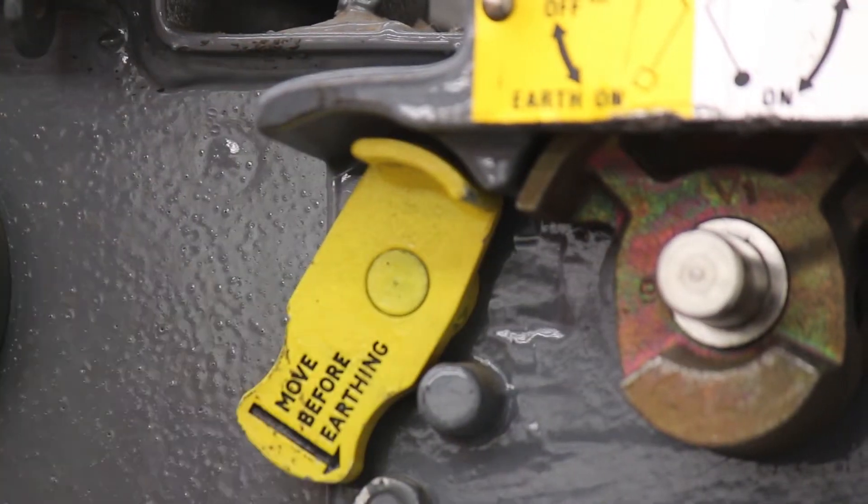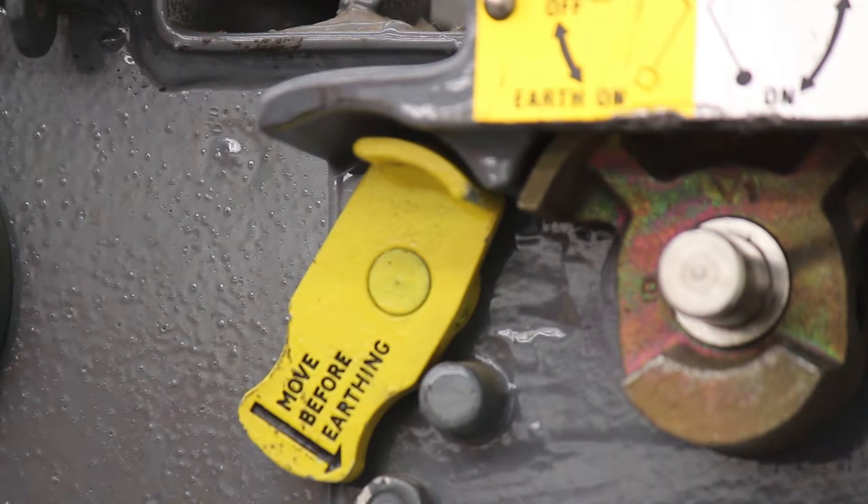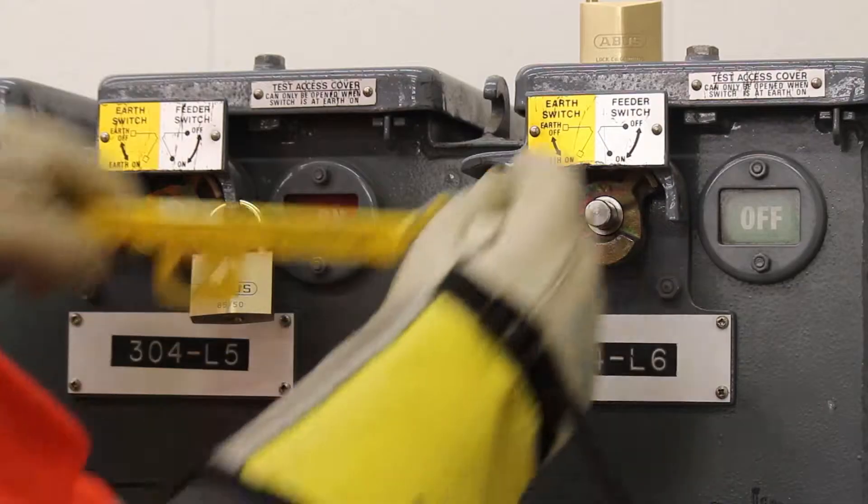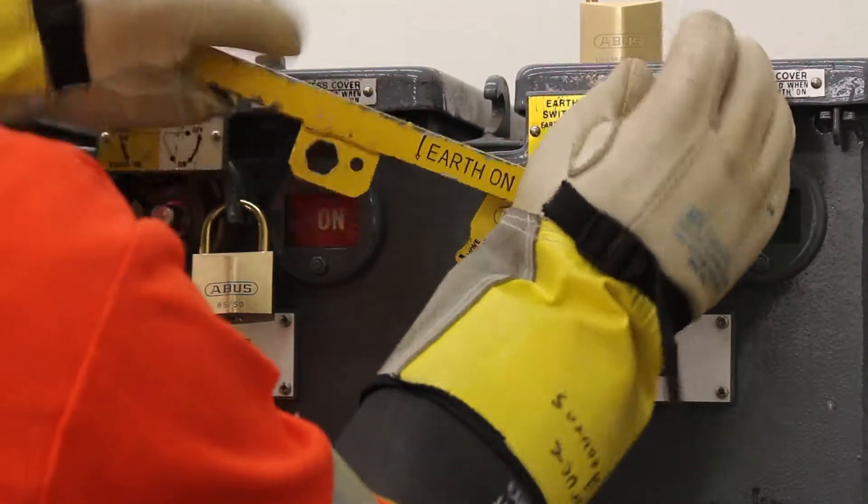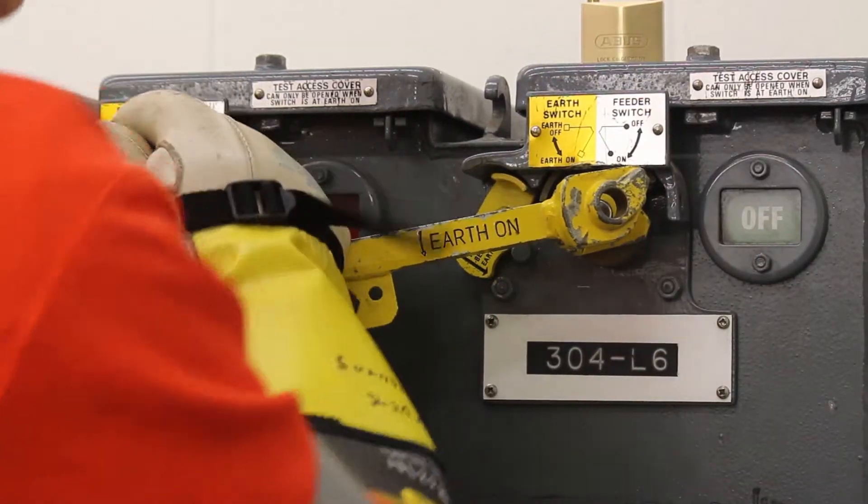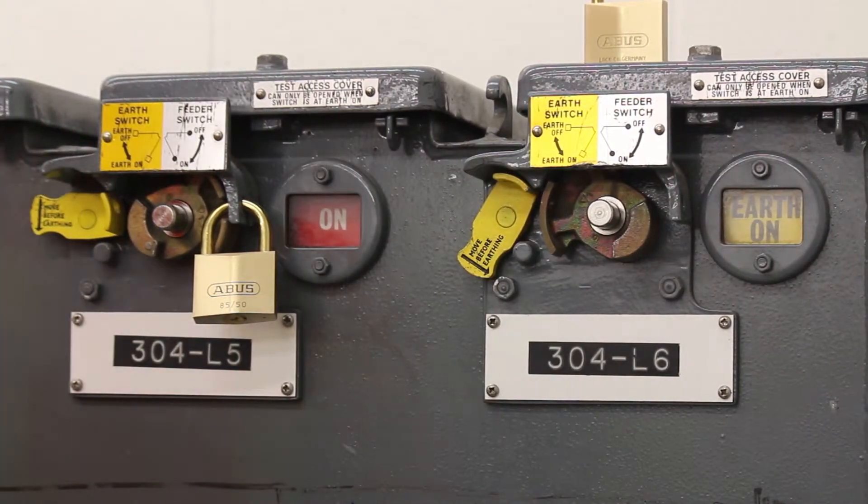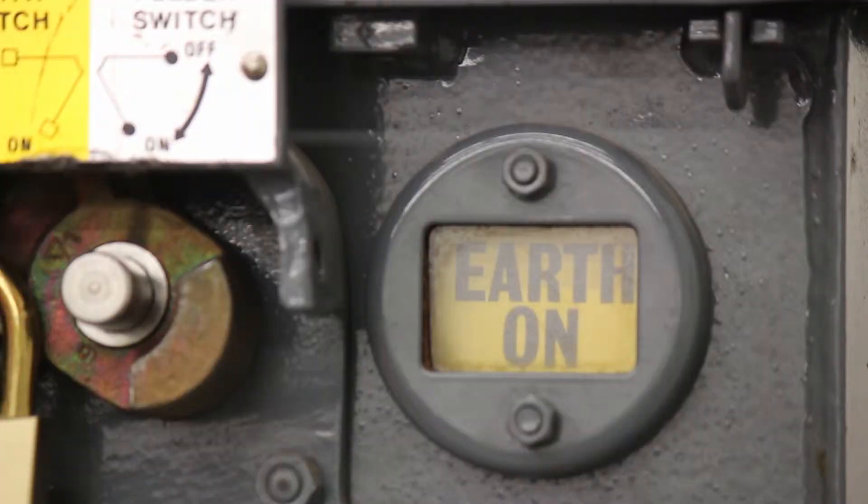Rotate the lever engraved 'move before earthing' counterclockwise to the stop. Insert the earthing operating handle. Move the handle fully to earth on position as indicated by a positive stop. Verify the switch position as indicated in the sight glass.